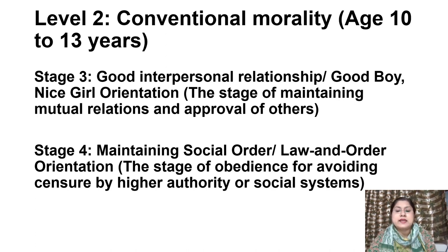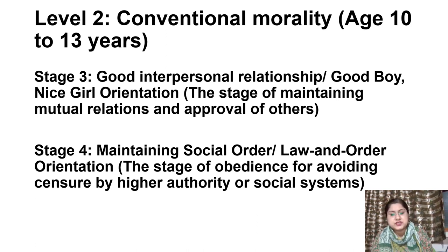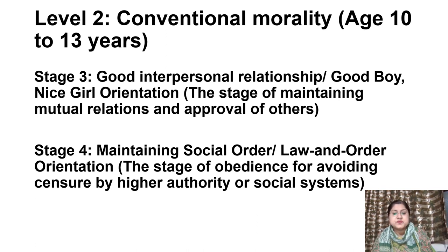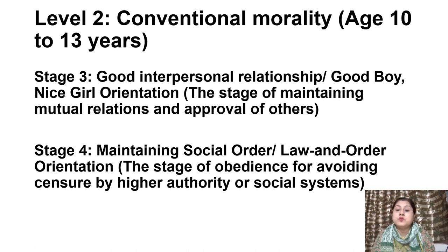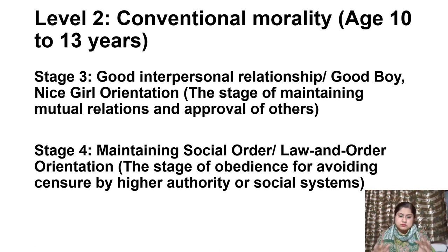Stage 3 is the good interpersonal relationship orientation stage — the stage of maintaining mutual relations and approval of others. In this stage, children want the approval of others and act in ways to avoid disapproval. Emphasis is placed on good behavior and people being nice to others.